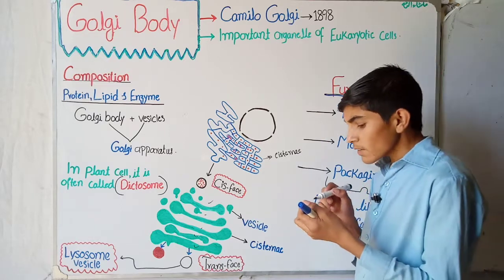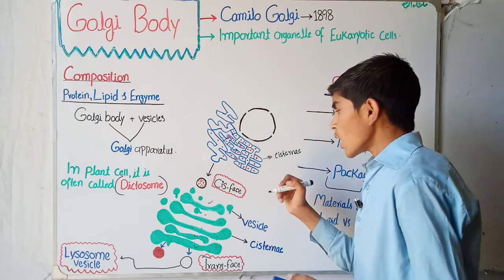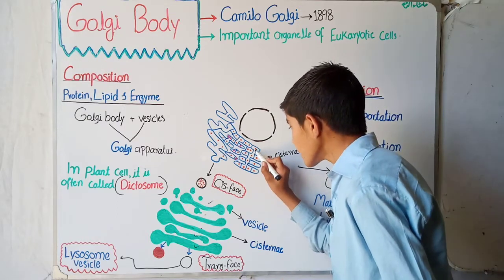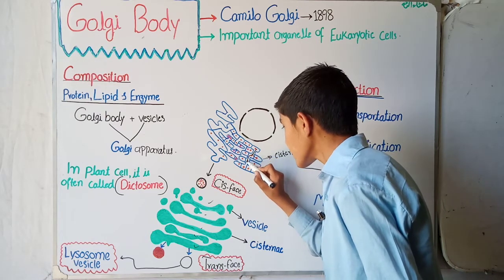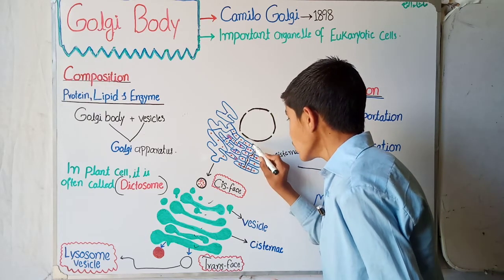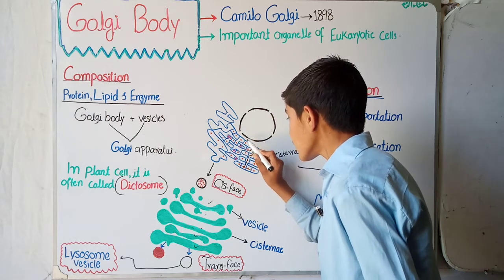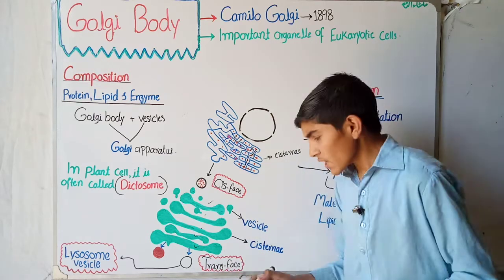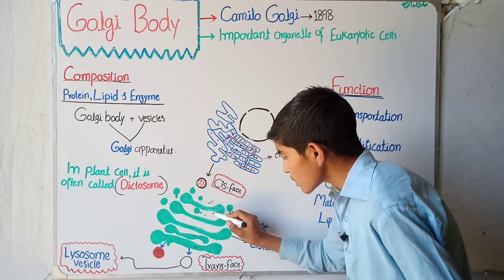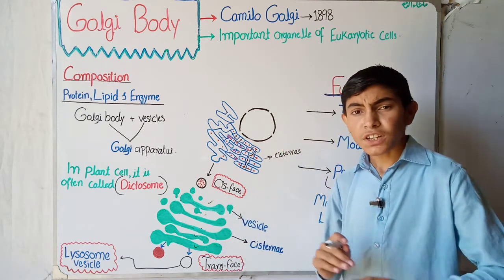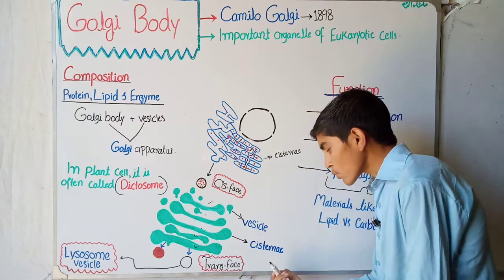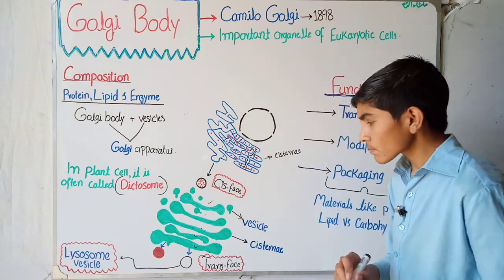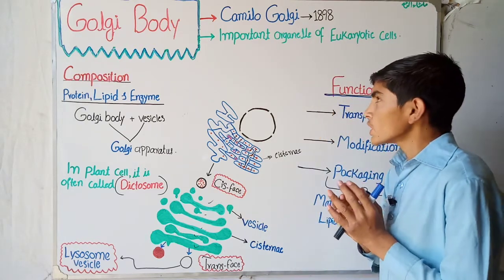An important difference: the cisternae of the endoplasmic reticulum are interconnected — you can see here they are interconnected. But in the Golgi apparatus, the cisternae are not interconnected — you can see there is no connection between them. This is the key difference between the cisternae of the Golgi apparatus and the cisternae of the endoplasmic reticulum.